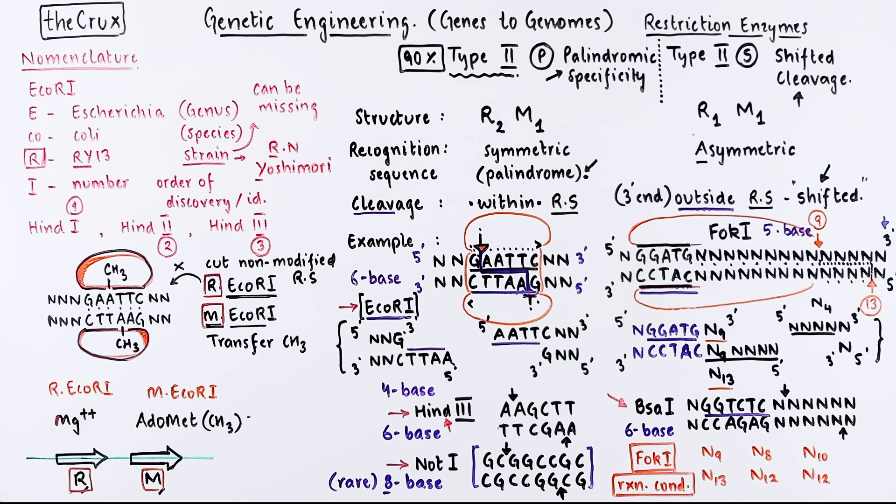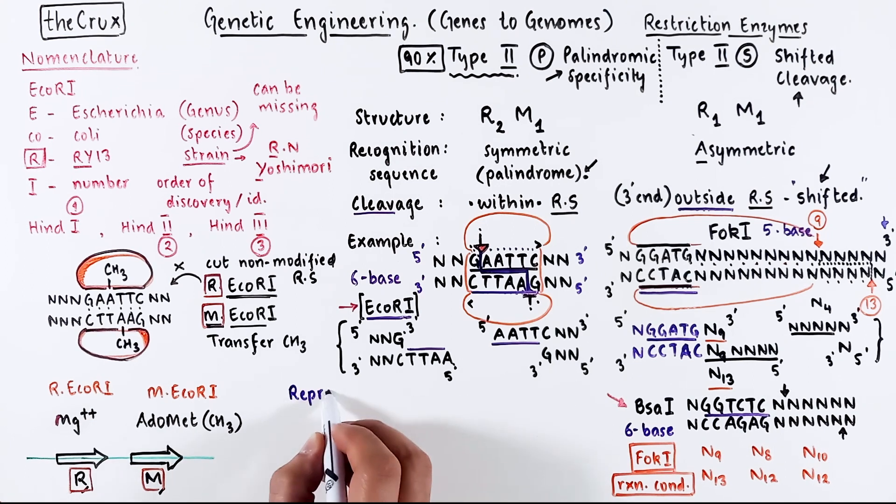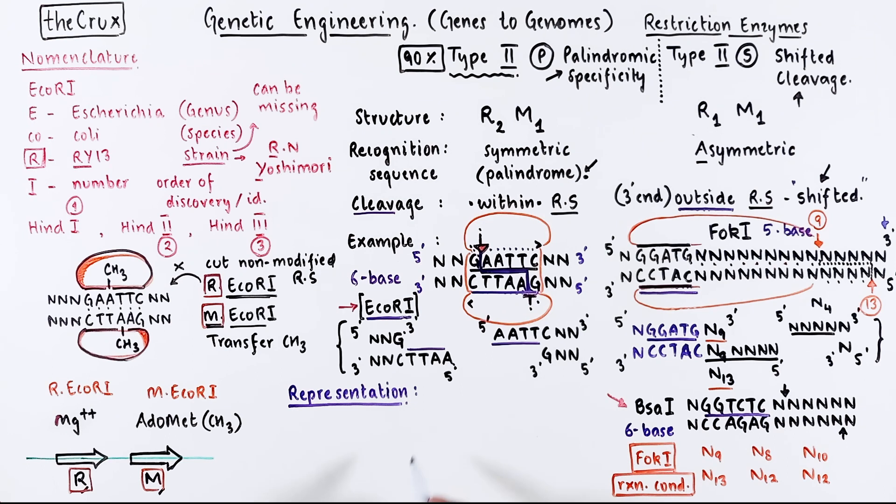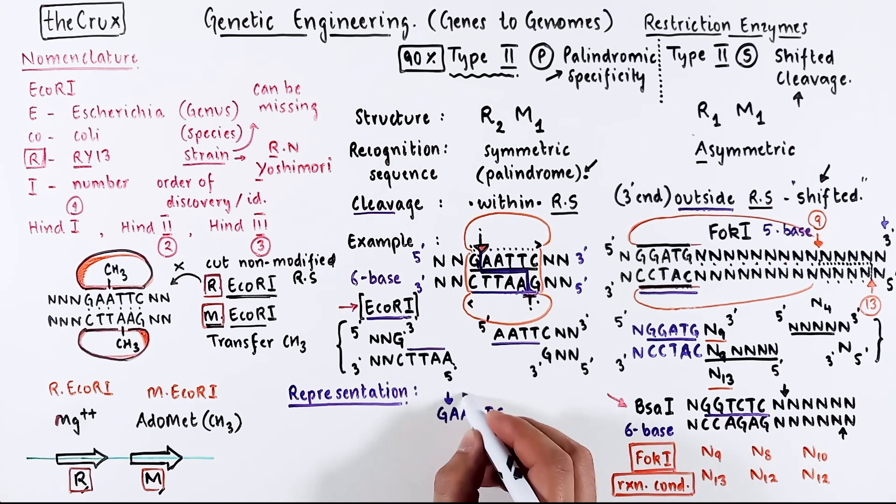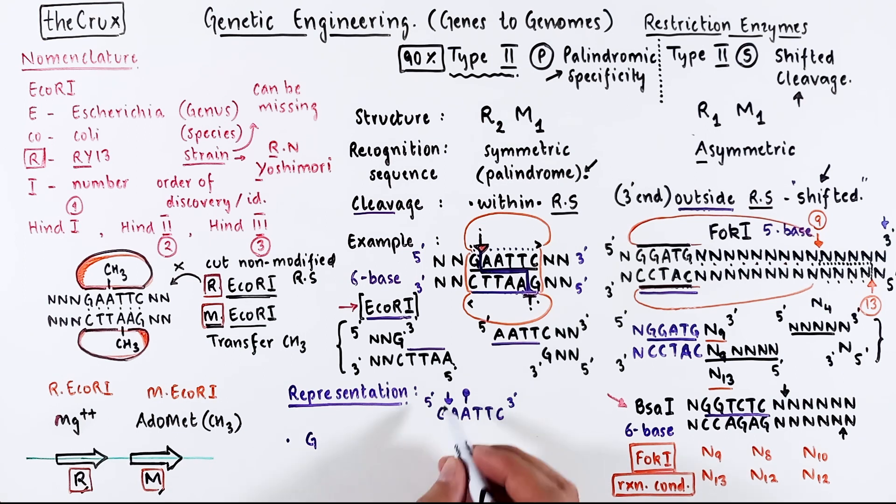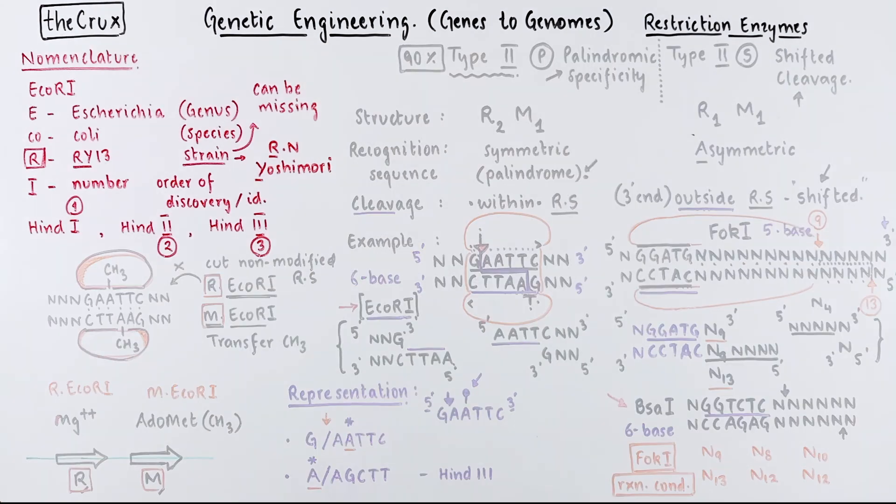All this information can be used to represent the enzymes and their function in a special style of writing. For instance, EcoR1 cuts GAATTC at a certain site and modifies a certain adenine. You can write the shorthand version of this cut by using a forward slash. Since it is palindrome, it doesn't matter. And the methylation nucleotide is represented by this asterisk. Likewise, HIN3 can be represented like this too. So asterisk at the modified base and slashes at the cut site. You don't have to memorize sequences or remember which base is modified. All that information is one Google search away from you. But when you see this representation, you should be able to understand what that pattern means and how it translates into a double-stranded DNA.